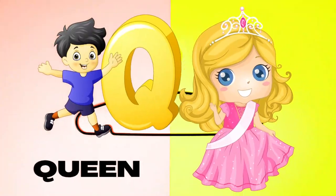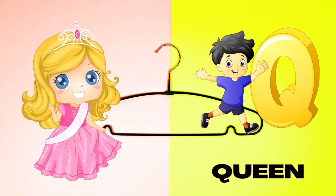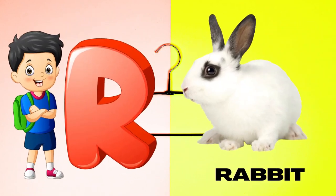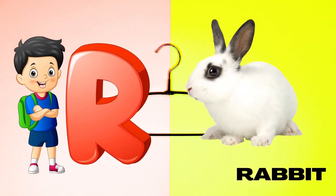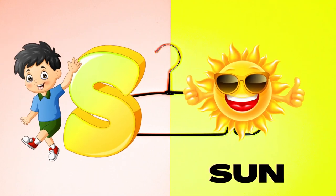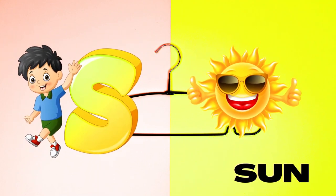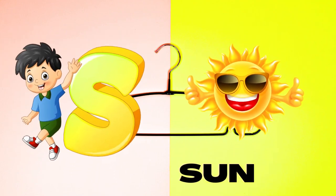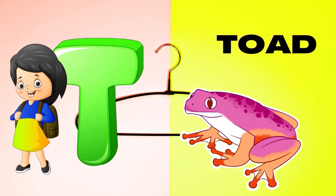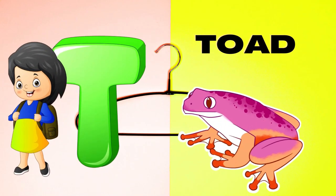Q is for Queen, Q-Q-Queen. R is for Rabbit, R-R-Rabbit. S is for Sun, S-S-Sun. T is for Toad, T-T-Toad.